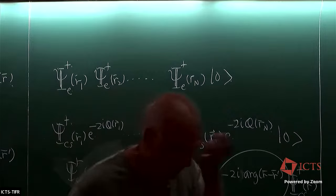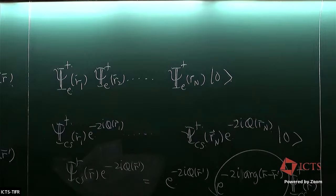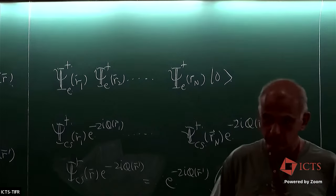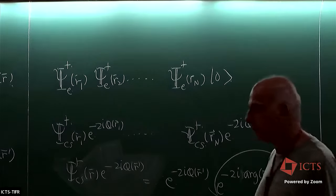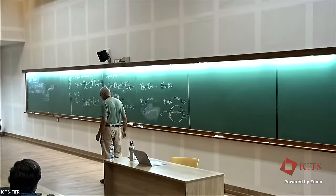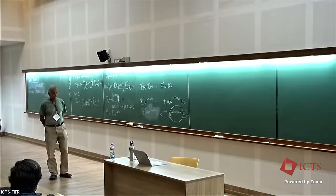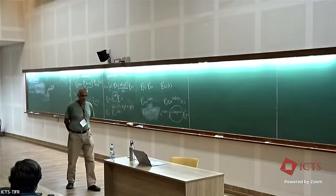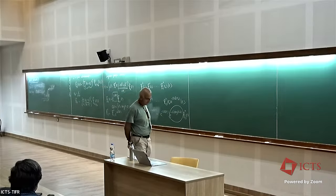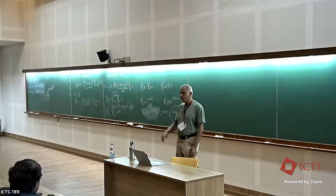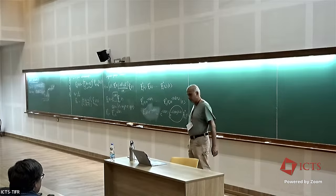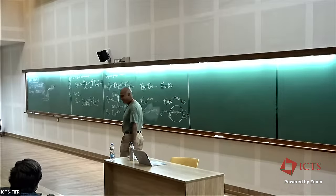The expression relating the electron operator to the Chern-Simons operator can be interpreted as a form of Jordan-Wigner transformation in two dimensions, similar to the strings used in one dimension to map bosons to fermions. You can also do it to map fermions to fermions, which is what we're doing here in a particular gauge. This is about duality.